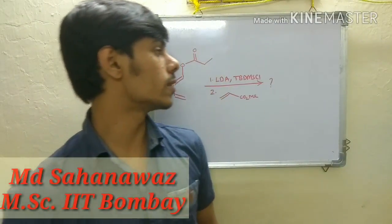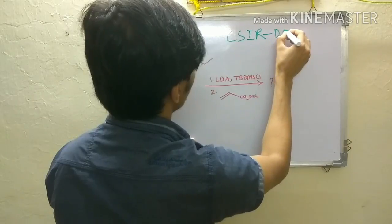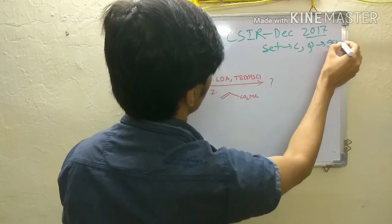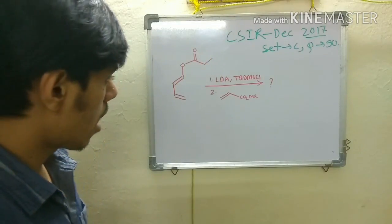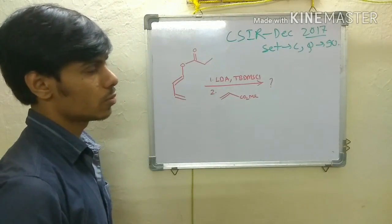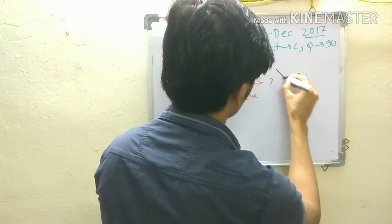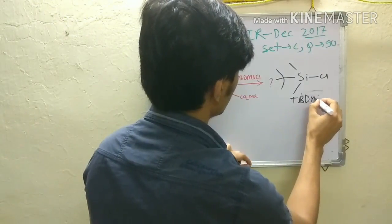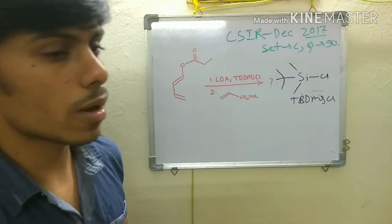Welcome. Today I am solving another interesting problem from CSIR December 2017, Set C, question number 19. You are given a diene with a star linkage and two conditions. The first is LDA, then TBDMSCl. TBDMSCl is a silicon protecting group — tert-butyl dimethylsilyl chloride — with a tert-butyl group, two methyl groups, and a chlorine group. The second step involves this diene, and you must determine the products from four given options.